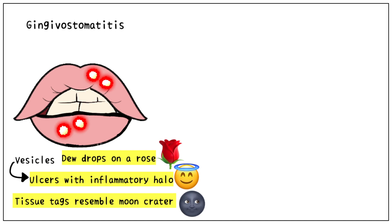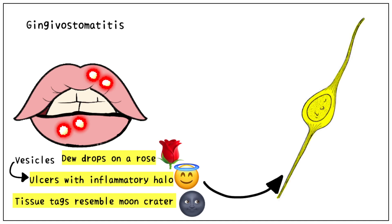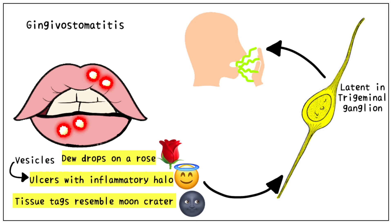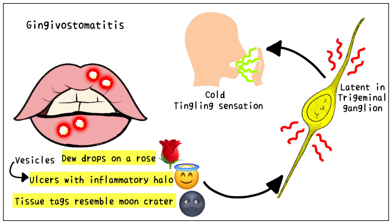These lesions heal and disappear, but herpes is a gift that keeps on giving. The virus goes and settles in the trigeminal ganglia, waiting for an opportunity to cause the next round of infection. When you catch a cold, the herpes virus sees it as an opportunity to reappear. Most people experience a tingling sensation along the nerve, followed by the appearance of another round of vesicles. This is why these lesions are also known as cold sores.